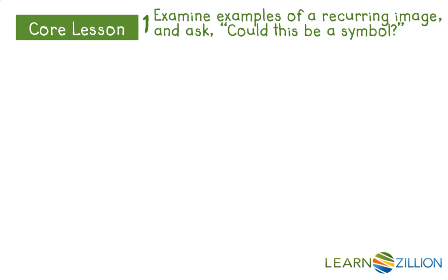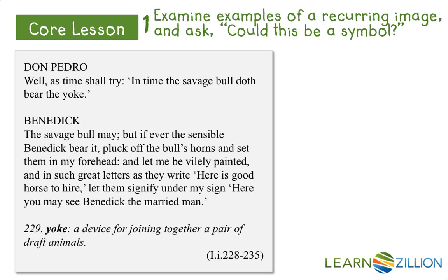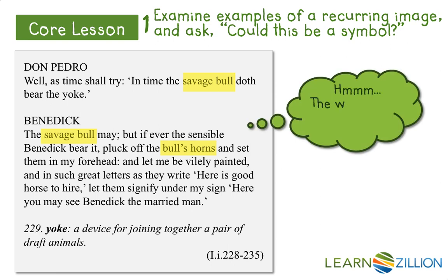In this exchange between Don Pedro and Benedict, we notice that the word bull is used three times. Don Pedro says, 'In time, the savage bull doth bear the yoke.' We see from the footnotes that the word yoke refers to a device for joining draft animals, bulls perhaps, together. Benedict's reply refers to a set of bull's horns set in his forehead. What might the significance of a bull or its horns be?